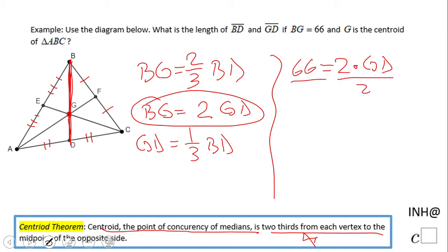GD will be 33, and now we need to find BD. BD is simple at this point.